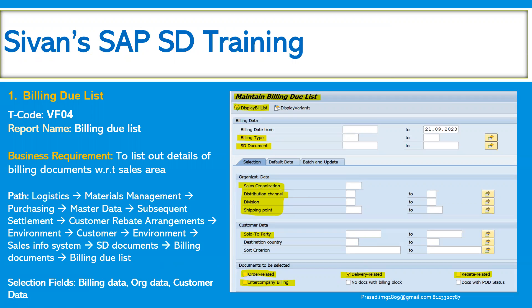With respect to sales area, if the business wants to see, they can execute this transaction by providing the input selection criteria like sales organization, distribution channel, and division, and then the date range from when to when these particular documents have been created in the system. So that also they can do.